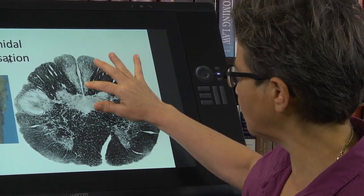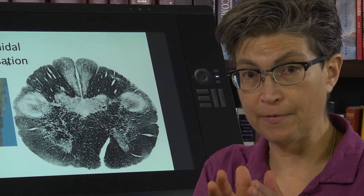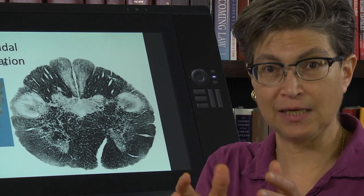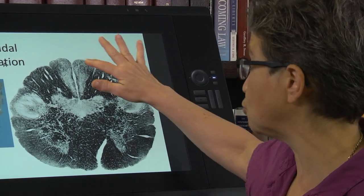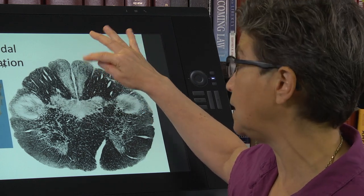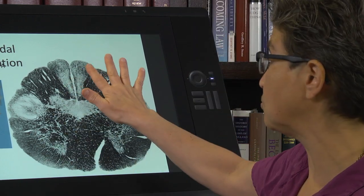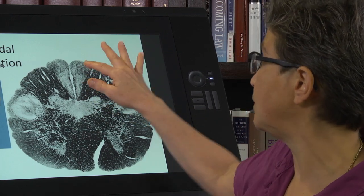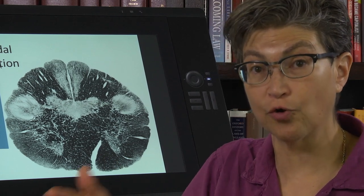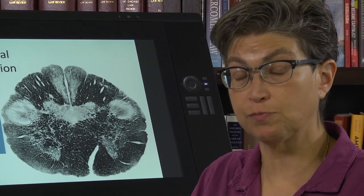Gracilis appears gray because those dorsal column axons — sensory afferents traveling all the way up — are synapsing in the dorsal column nuclei. There are two: nucleus gracilis for fasciculus gracilis and nucleus cuneatus for fasciculus cuneatus, collectively called the dorsal column nuclei. They begin at the very back of the medulla, and nucleus gracilis starts before nucleus cuneatus, consistent with its more caudal representation.